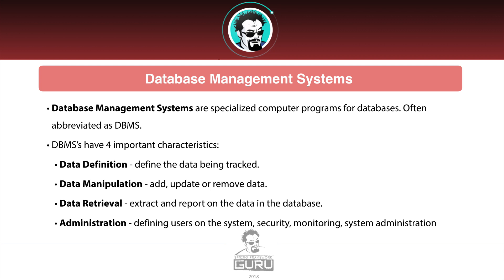The first characteristic is data definition — all database management systems have some ability to define the data being tracked within the system. The second is data manipulation: operations where you can add data into the system, update existing data, or remove and delete data. The third is data retrieval — we want to be able to get data out of the system for some type of use, like reporting. For example, I need to look up that spreadsheet and pull data out to figure out how much I have to pay Michael.